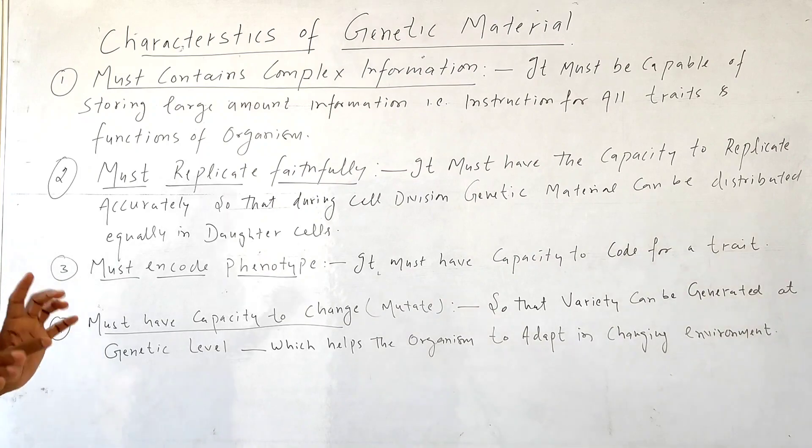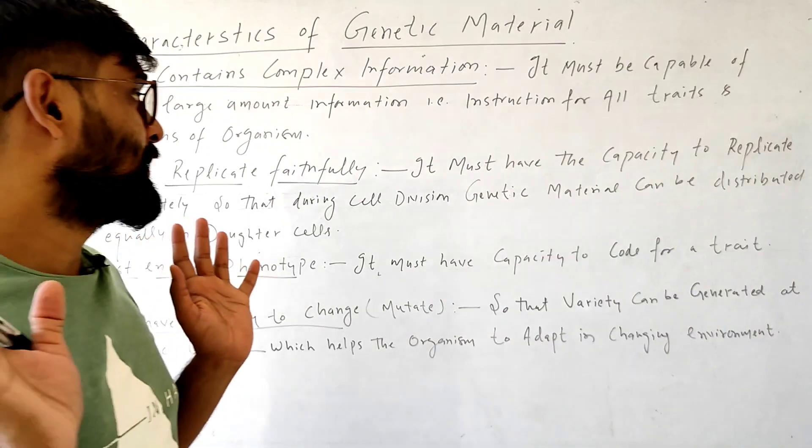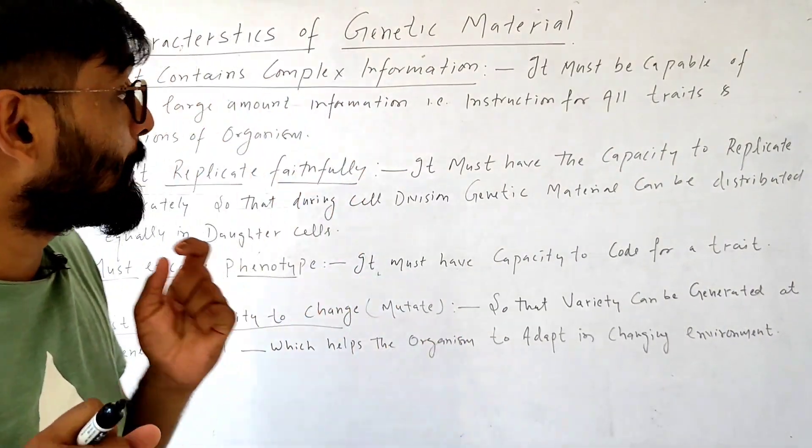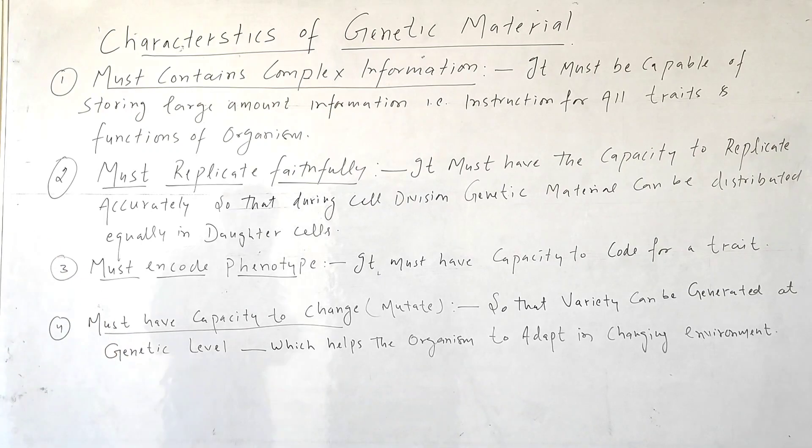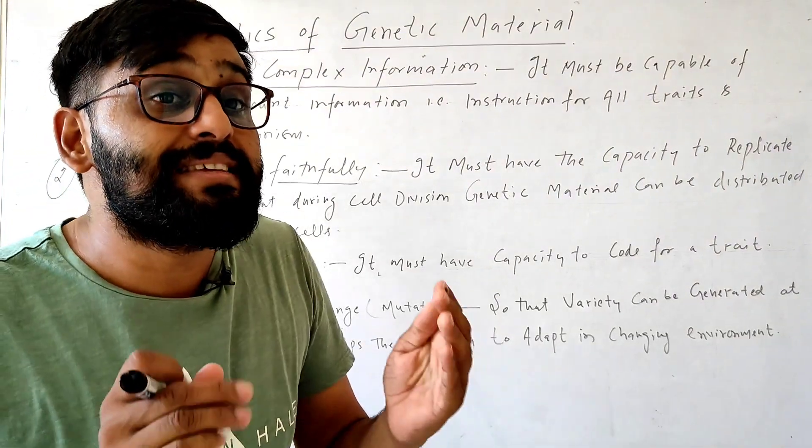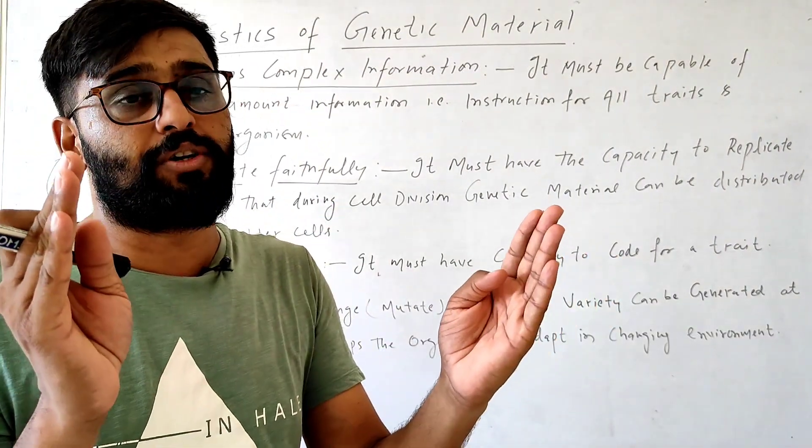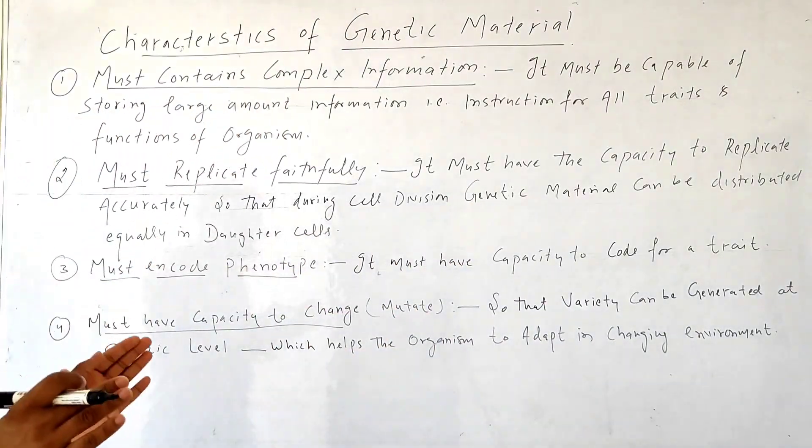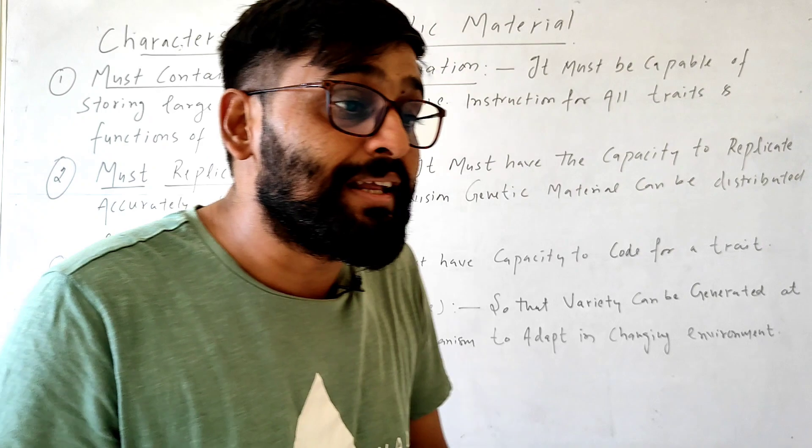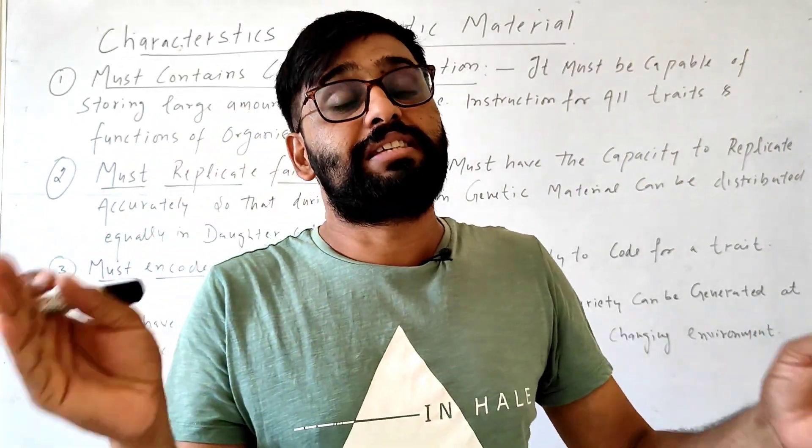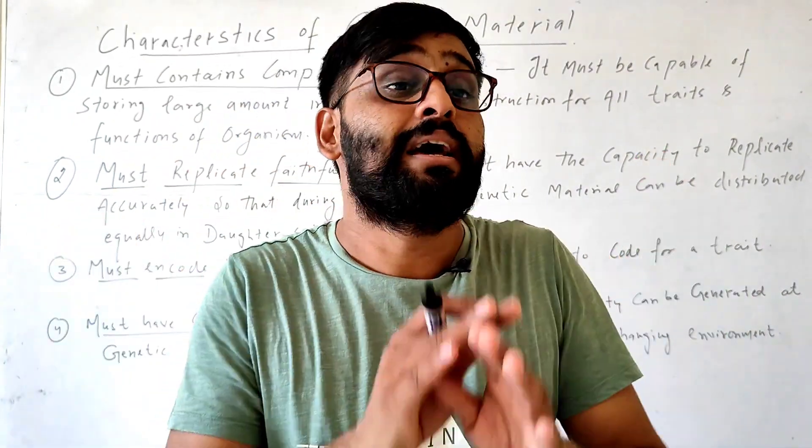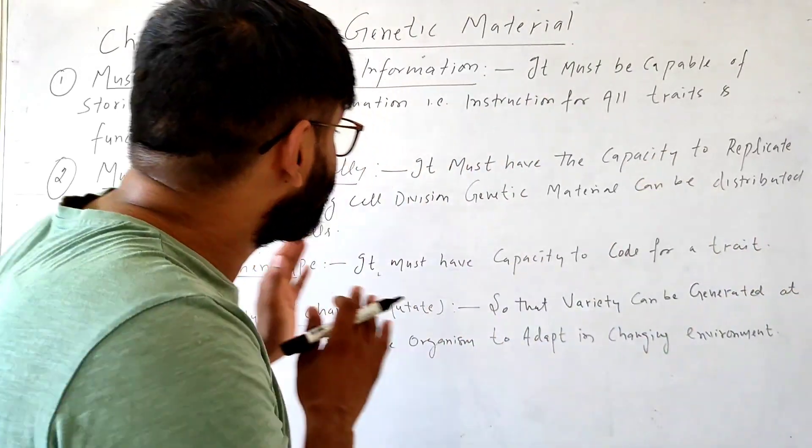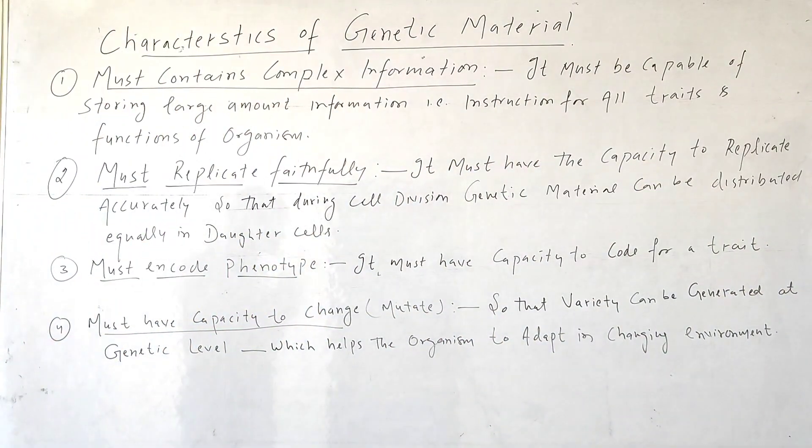Second, genetic material must replicate faithfully. It must have the capacity to replicate accurately. Why? Because during cell division there is a need for equal distribution of genetic material in daughter cells. So if it divides accurately, it will replicate accurately, then it will distribute its genetic material in daughter cells accurately and exactly the same.